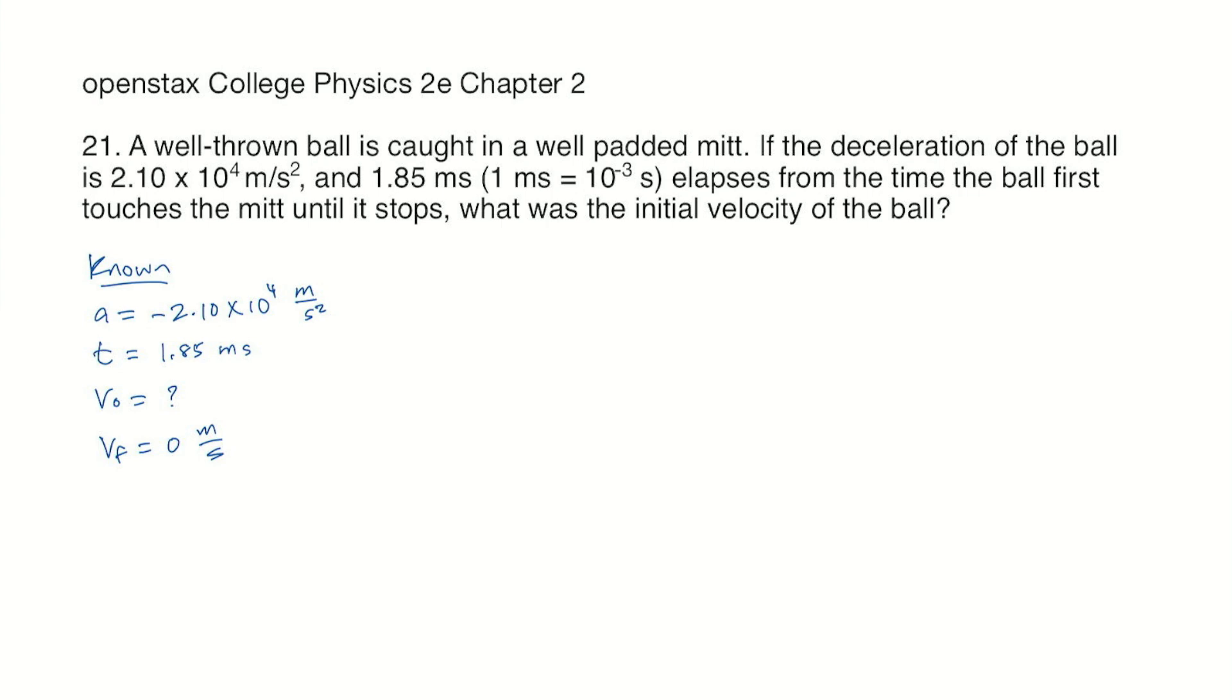We know acceleration is final velocity minus initial velocity over elapsed time. Multiply both sides by t, we get a times t is final velocity minus initial velocity.